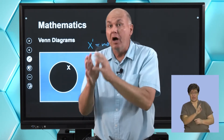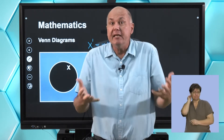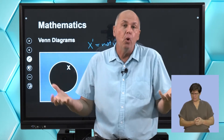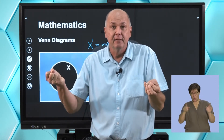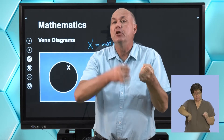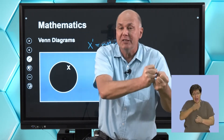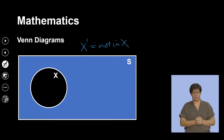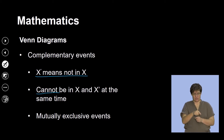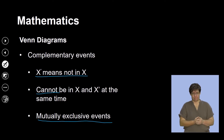If we look at X and its complement, notice there is no intersection — you can't be in X and not in X at the same time. So what do we call those two sets? They are mutually exclusive. If we've chosen X, we're excluding all those elements not in X. In a complementary event, X prime or X dash means not in X; they cannot happen at the same time, so these are mutually exclusive events.